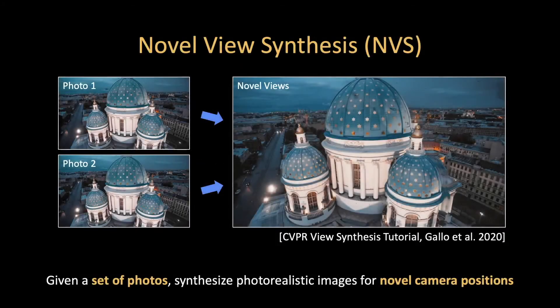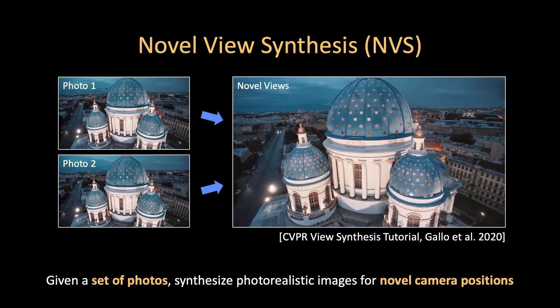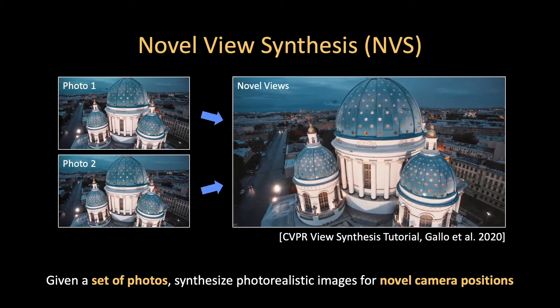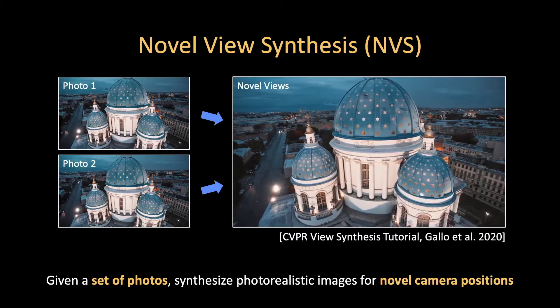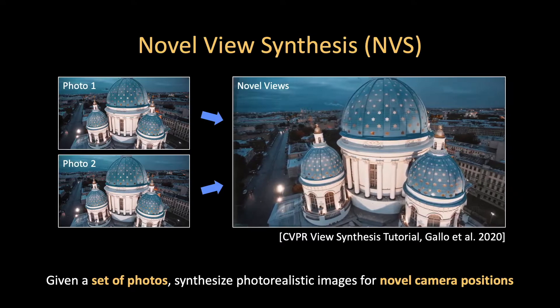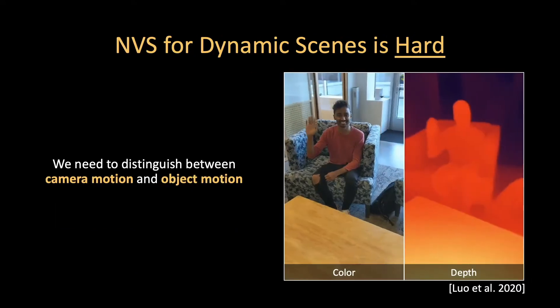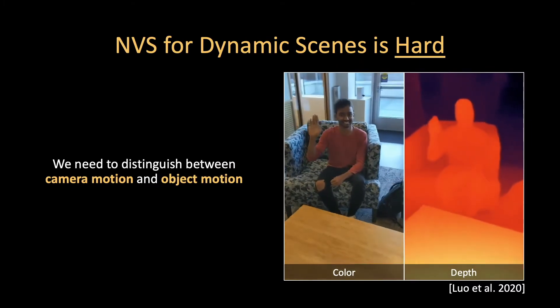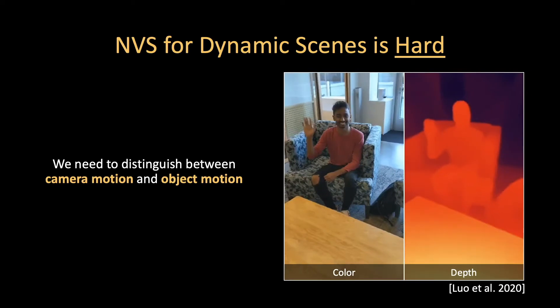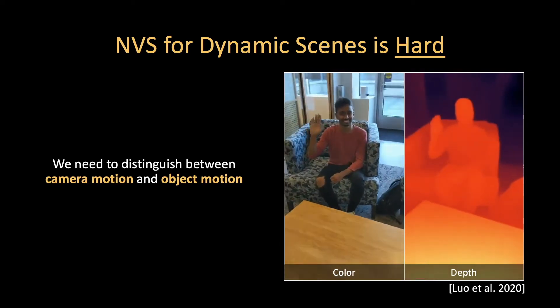Novel view synthesis is a problem that has received a lot of renewed interest recently in both the computer vision and graphics communities. Given a set of images captured from different perspectives, the goal is to photorealistically render views of the scene from novel, unobserved camera poses. However, this problem becomes significantly more challenging for dynamic scenes. This is because we must disentangle image changes due to camera motion from changes due to object motion.